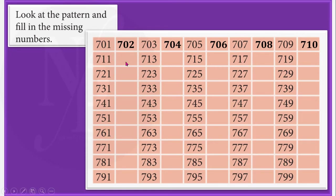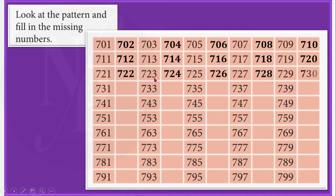So here we have 711. The next number is 712. 713 is printed. We should write 714. So likewise, we should complete this number grid by writing the missing numbers. So here 721, next number is 722, 723, 724, 725, 726, 727, 728, 729, 730. So like this, you should write all the missing numbers to complete this number grid.